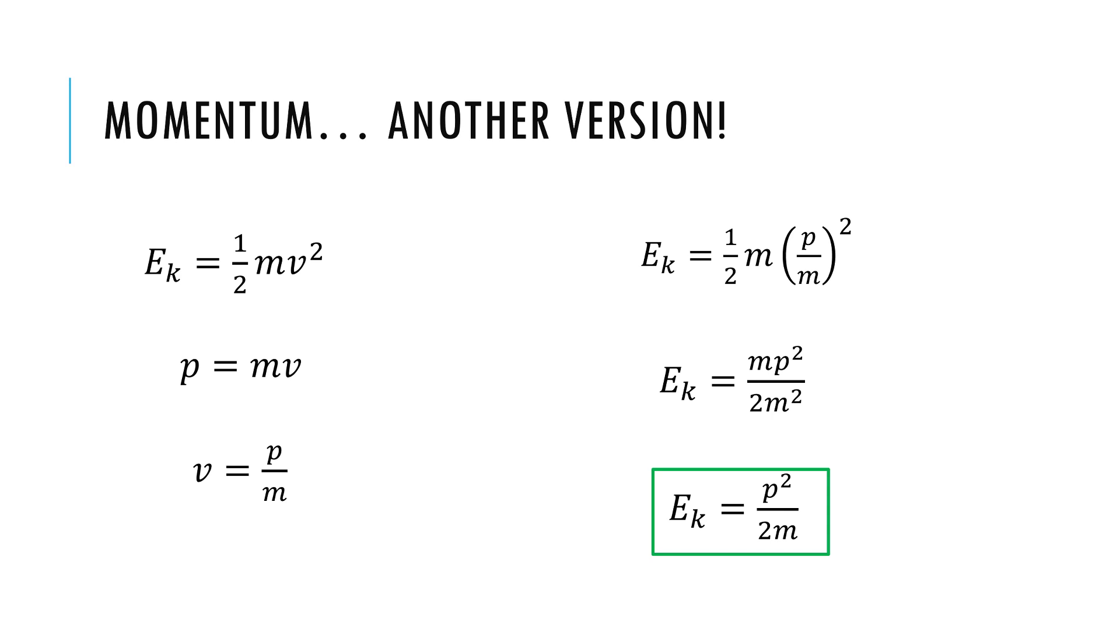This is just a reminder really that this equation is in your data booklet. It is useful sometimes in specific situations, especially some of the later units honestly, but this can be a useful equation if you know the momentum of an object and don't know its velocity right off the bat. This can be a very quick way to do it, especially to talk about the relationship between kinetic energy and momentum. So just don't forget that this is in your data booklet in topic two.